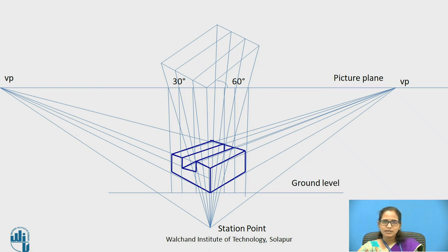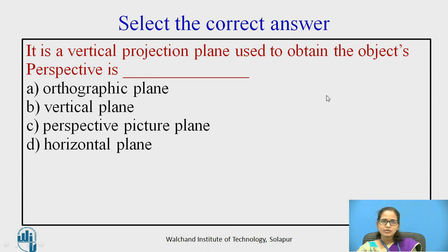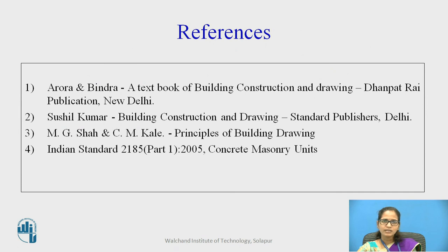The two point perspective helps us represent the overall 3D model of an object on a two dimensional paper surface. It is used in the interiors of buildings, with angles of 30 and 60 degrees. The key elements are the picture plane, ground level, and station point — the point of observation. For the MCQ: a vertical projection plane used to obtain the object's perspective is the perspective picture plane. Thank you.